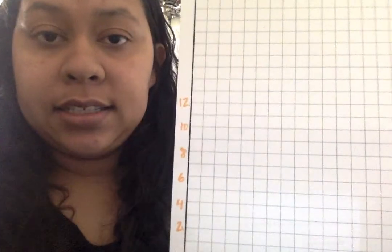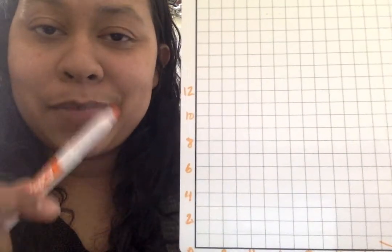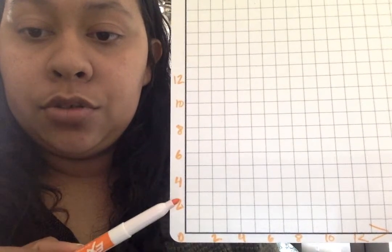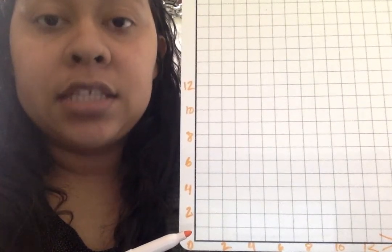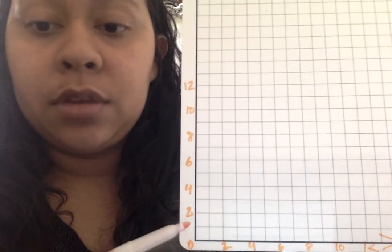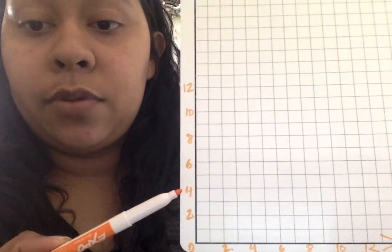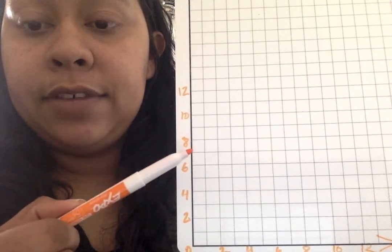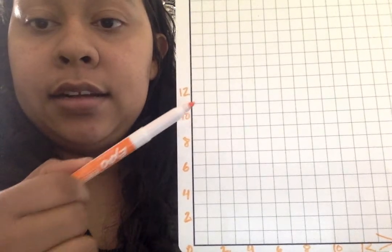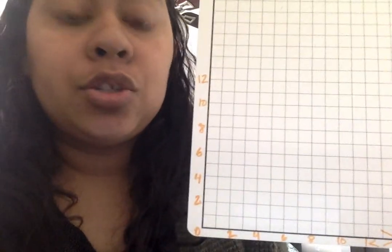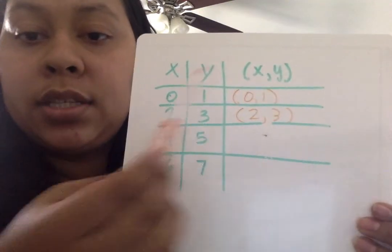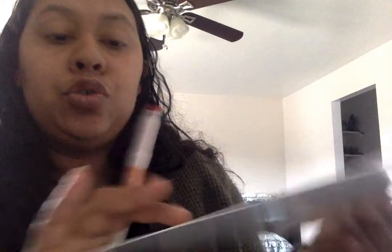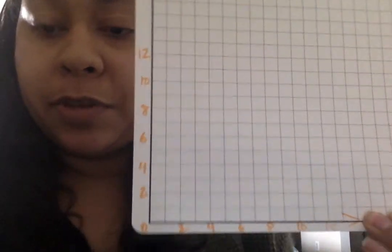So then on the y-axis, it has the similar pattern, where it's counting by twos. So zero, two, four, six, eight, ten, twelve. So that means every blank line is also a whole, so it'd be zero, one, two, three, four, five, six, seven, eight, nine, ten, eleven, twelve. So now you're using the coordinate points that you made on your table to plot it onto your coordinate plane. I'm going to use my green marker for this.